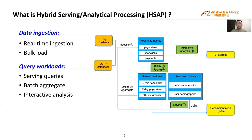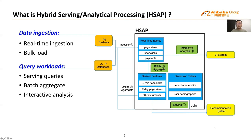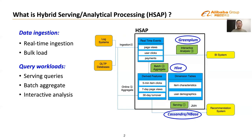Besides recommendation, these data are also used in ad-hoc analytical queries to support the business intelligence system. This demonstrates a highly complex HSAP scenario, ranging from real-time ingestion to bulk load, and from serving workload to interactive analysis and batch aggregation. Currently, this scenario is usually served using multiple isolated systems — such as Cassandra and HBase for serving, Hive for batch aggregation, and Greenplum for interactive analysis. Such a solution causes excessive data duplication, complex data synchronization across systems, and non-trivial development overhead. We need a unified HSAP solution to solve these problems.